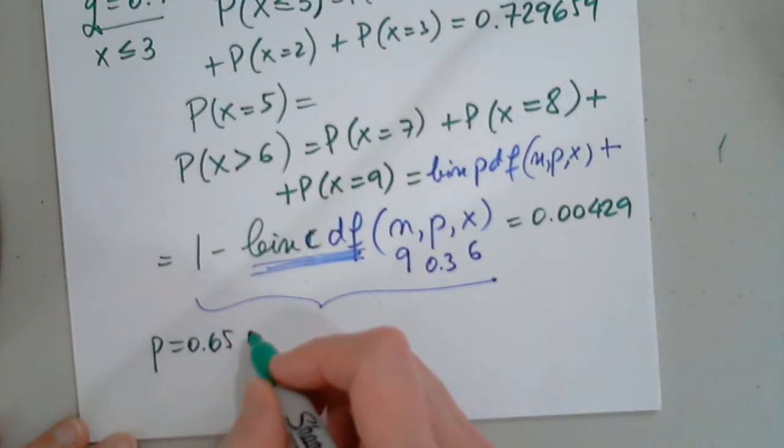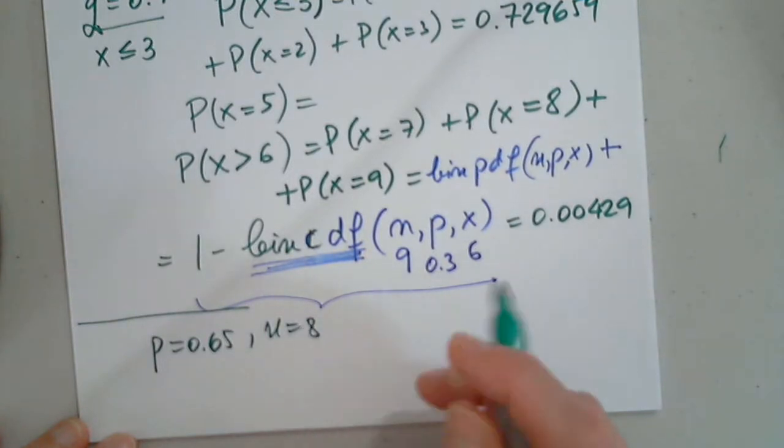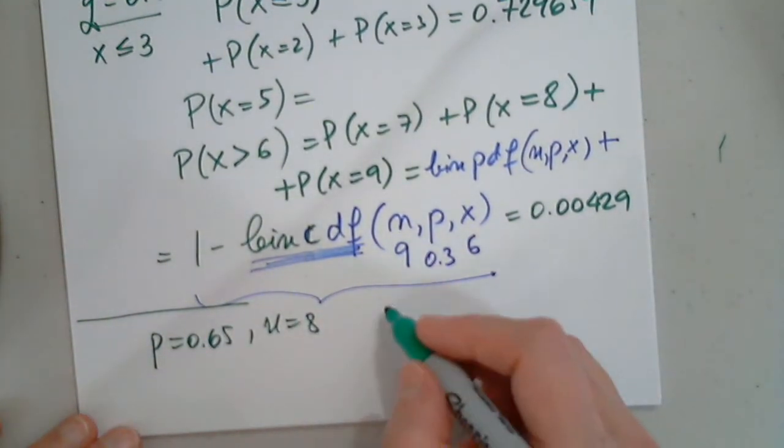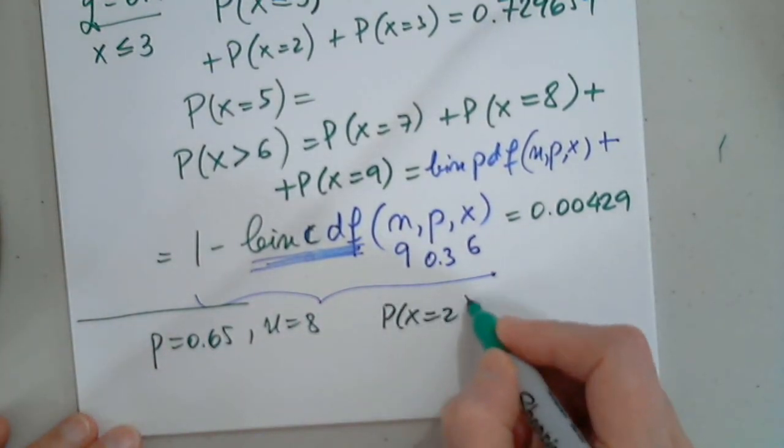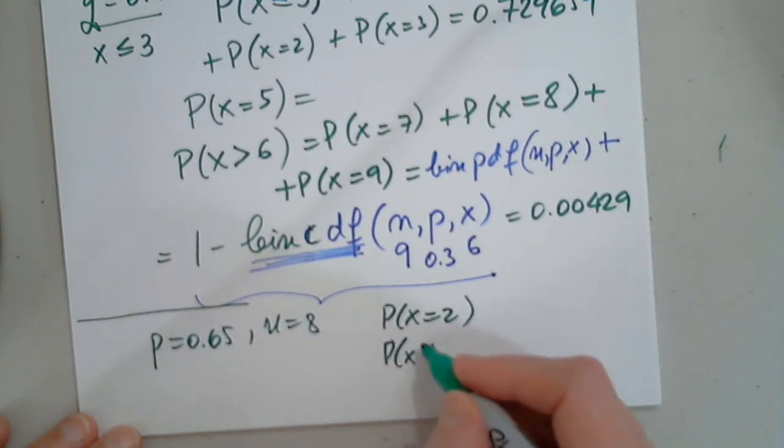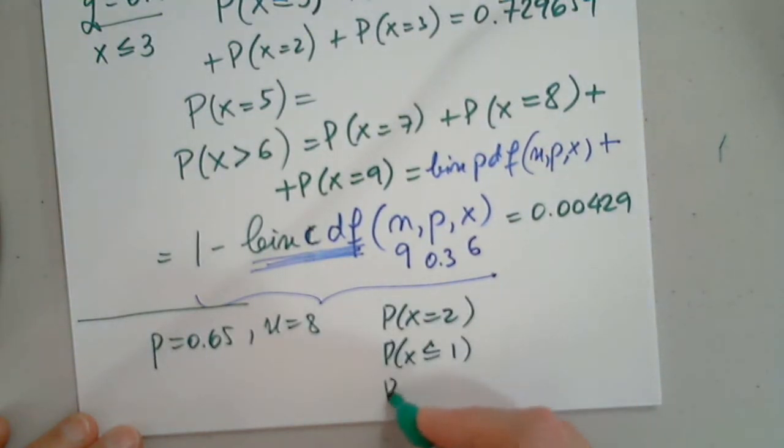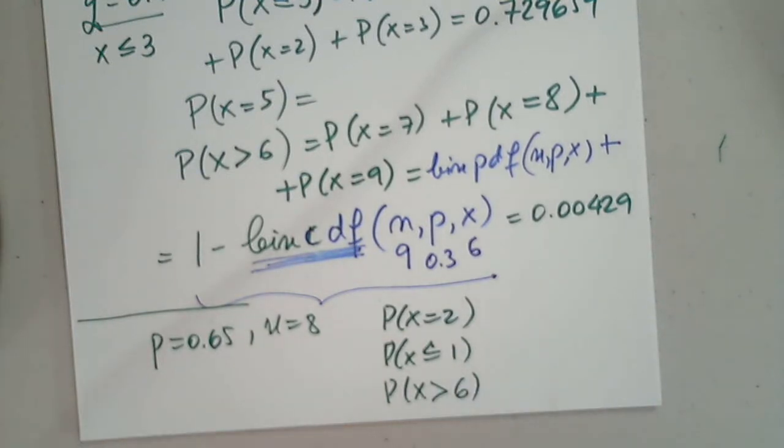p equals 0.65, n equals 8. Determine the probabilities below. Perfect. So we have the probability for x to be 2, probability for x to be less than or equal to 1, and the probability for x to be greater than 6. Excellent.